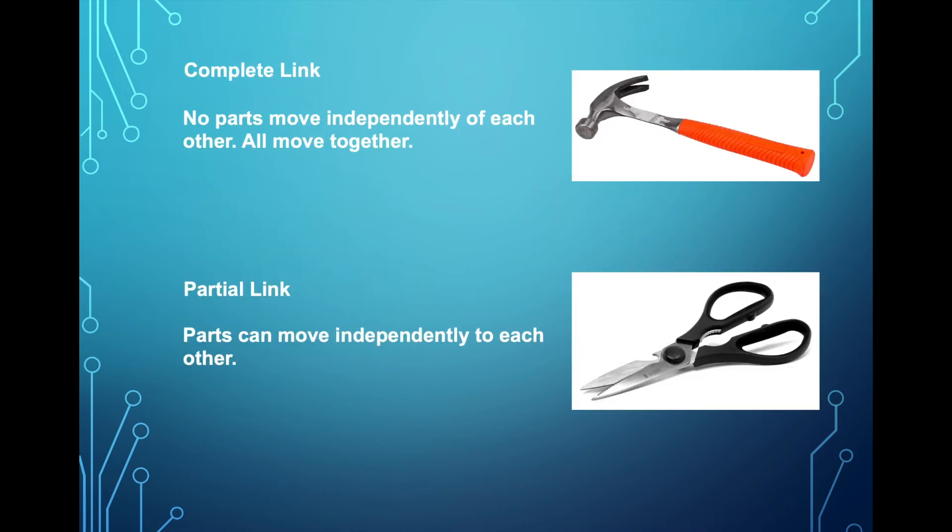And then we have complete versus partial. So a complete link doesn't allow for the parts that are linked together to move independently. In a hammer, well, this here and this here will move together, right? These two are linked, but I can't start bending this part, for example, and this will stay rigid. That doesn't work that way.